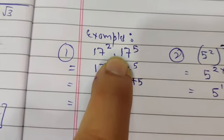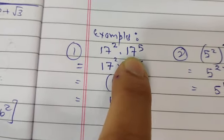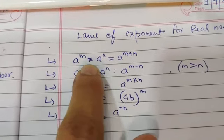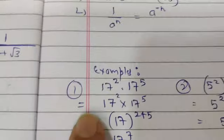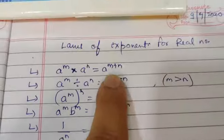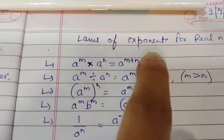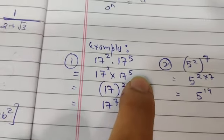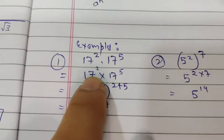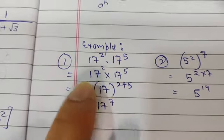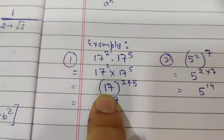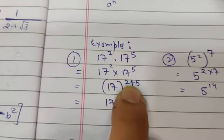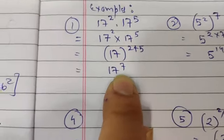Here we have 17 squared multiplied by 17 to the power 5. Which law applies? The first law — A to the power M multiplied by A to the power N. Bases are the same and powers are different, so we write 17 to the power 2 plus 5. Because we are multiplying, the powers add. So 2 plus 5 equals 7, giving us 17 to the power 7 as the answer.